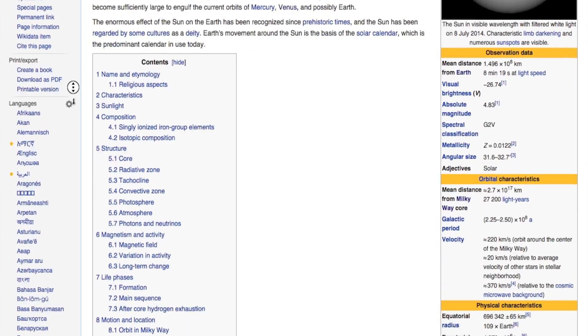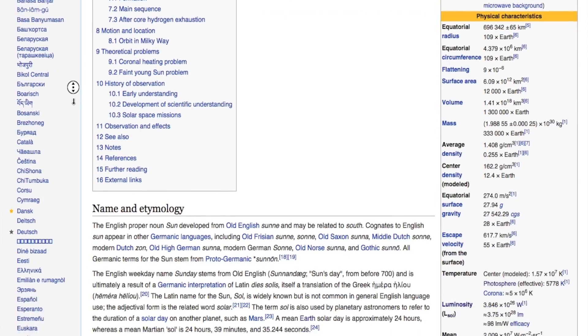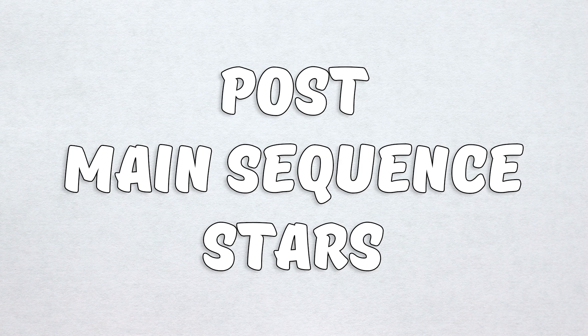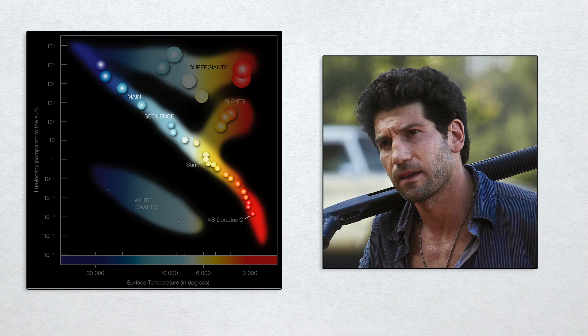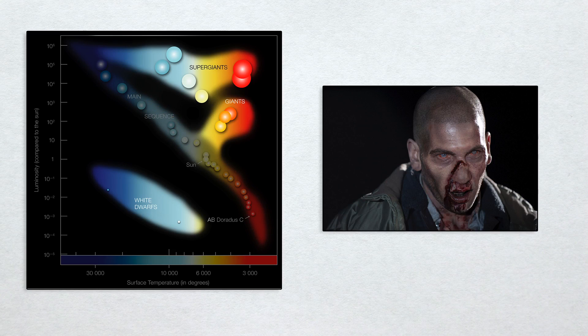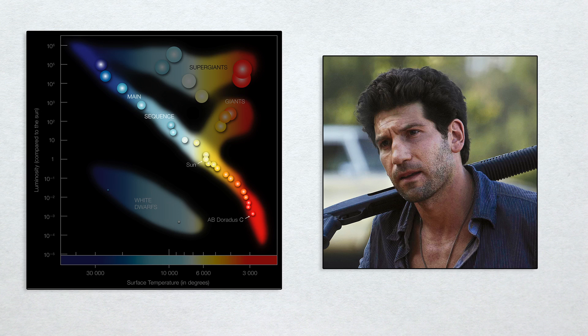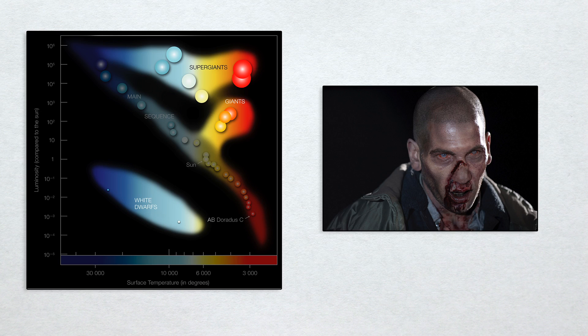Main sequence stars are like Shane from The Walking Dead, and post-main sequence stars are like, well, Shane from The Walking Dead. Living stars hang out in the main sequence, and everything else is either dead or dying. Dead or dying stars are, for the most part, extremely hard to describe using simple maths. So let's take a break from the formulas for a bit and check out some nifty graphs.